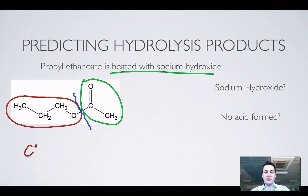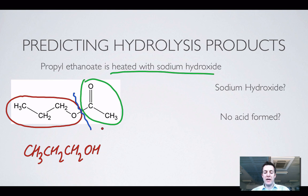Now if I put the H back on the alcohol, I'd expect to make CH₃CH₂CH₂OH — so that's my alcohol, propanol. And if I put the OH back on the acid, I'd expect to make ethanoic acid, but...